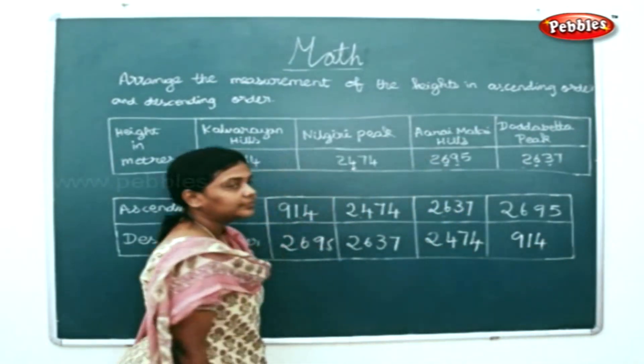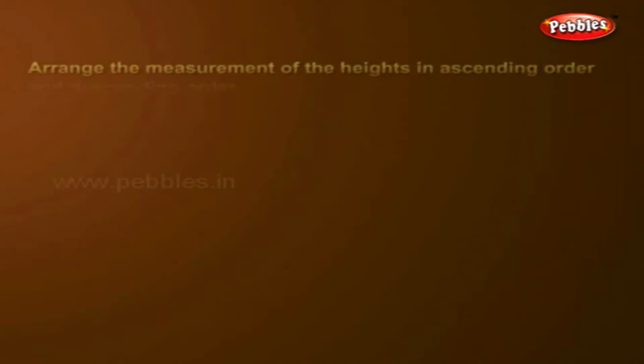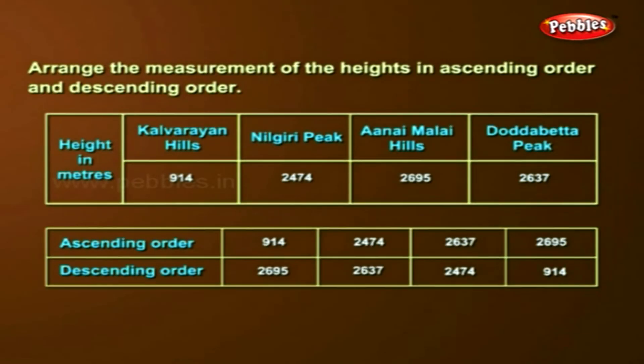So the ascending order is: 914, then 2,4,7,4, then 2,6,3,7, and then 2,6,4,7.